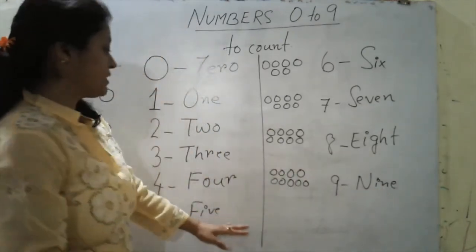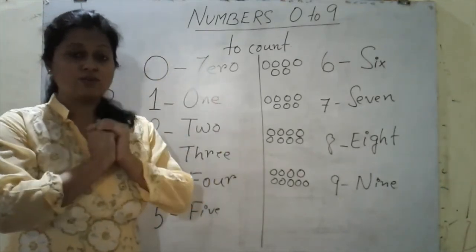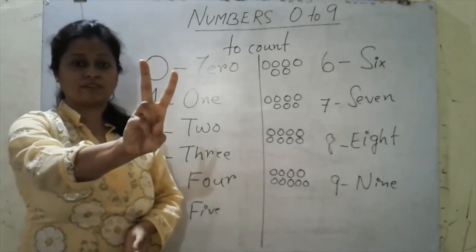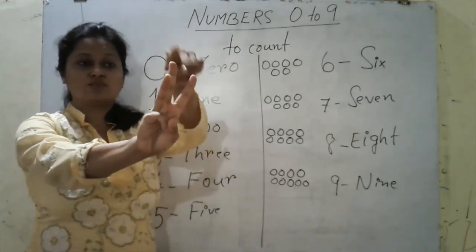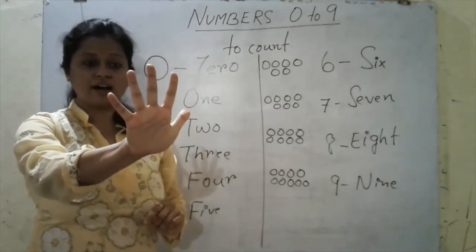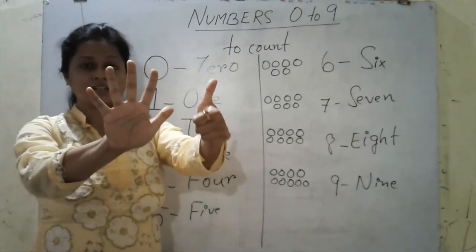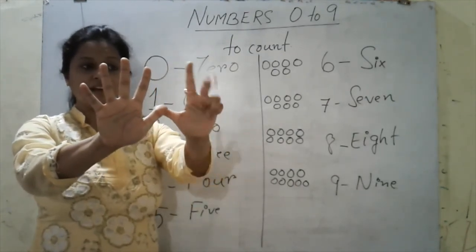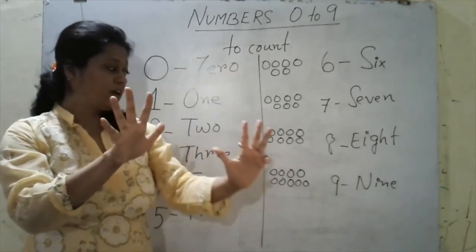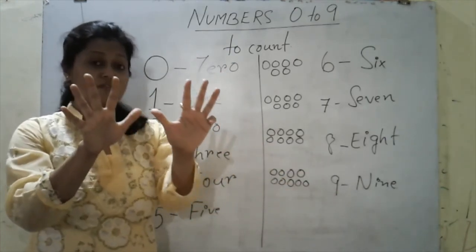So children, you can also practice counting with your fingers. In total, we have got 10 fingers. So when I ask you children, show me one finger, what will you show? Two, three. One, two, three, four. One, two, three, four, five. One, two, three, four, five, six, seven, eight, and nine. So these are your nine fingers. So today we learnt up till nine. So you can also show and practice counting with your fingers.